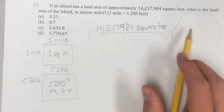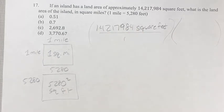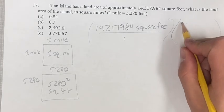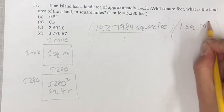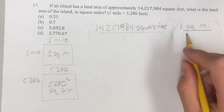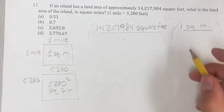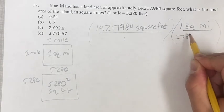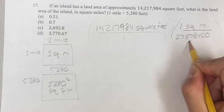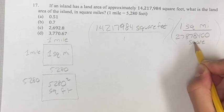so therefore when we multiply this by this, this doesn't change. Because when you multiply anything by one, its value stays the same. One square mile over 5,280 squared, I can actually just write that out right now, 27,878,400 square feet.